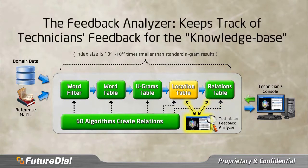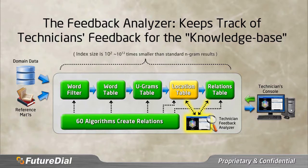As your technicians utilize the system by viewing, referencing, and entering new information via the system's technician's console, the feedback analyzer keeps track of and analyzes their feedback to factor into the knowledge base. The technician feedback analyzer can either strengthen or weaken the Ugram relationships within the system based on the feedback from those technicians. In this way, the system, as a learning entity, continues to gain more relevant data and knowledge the more the system is used, providing you with greater competitive advantages over time based on what it is taught by technician's input.